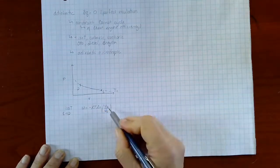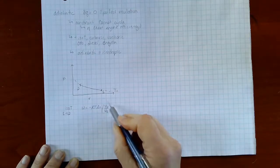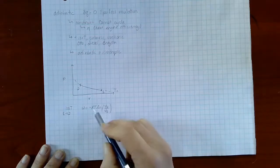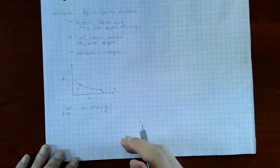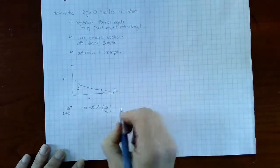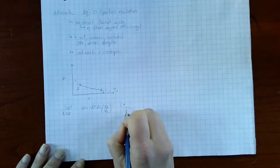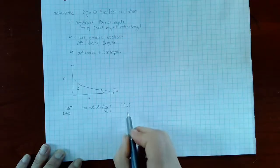Since we're doing compression, volume 2 is smaller than volume 1, so this fraction, the natural log of this fraction is negative. That cancels with this negative and what we see is that when we compress a gas we are doing work on the gas, so energy is flowing into the system in the form of work.